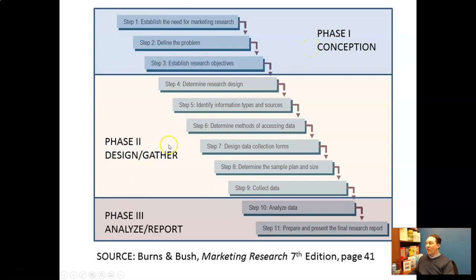Phase one is conception, phase two is design and gather, and phase three is analyze and report. I find it easier to think about these three phases because that's how research projects tend to break down. I'm going to review these steps now because they are important, but I'm going to put a qualitative research twist on them to help you understand how they are a little bit different as well.